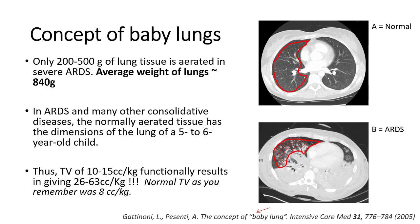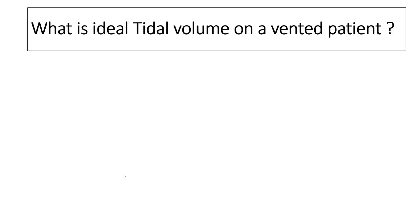The aerated volume in ARDS is typically the dimensions of a 5 to 6-year-old child — hence the term 'baby lungs.' If you use a tidal volume of 10 to 15 cc per kg in these patients, you are effectively giving them significantly higher tidal volumes relative to the volume they actually have, resulting in over-stretching and more lung injury.